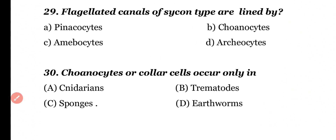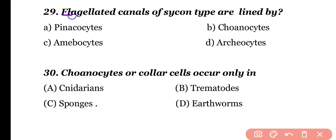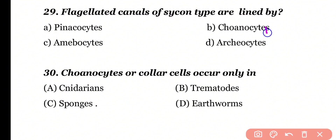Question number 29. Flagellated canals of sycon type are lined by: pinacocytes, choanocytes, amoebocytes, or archaeocytes. Correct answer is option B. Flagellated canals of sycon type are lined by choanocytes cells.